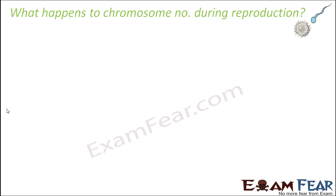Let us see what happens to the chromosome number during reproduction, because the chromosome is going to play the main role in the story of genetics. Chromosome plays the leading role — like the lead role in a movie. We already have discussed the process of sexual reproduction in human beings, so we have the basic idea about what a chromosome is and how many chromosomes exist in a human body.